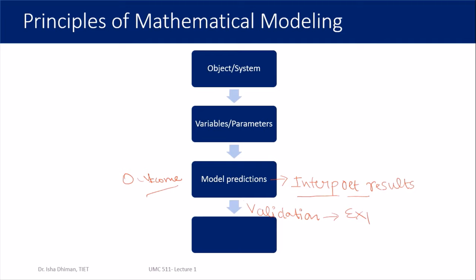We need to perform the step of validation. Sometimes validation is done through experimentation: you have experimental data and you verify the outcomes of your model against it — if they match, your model is working correctly. Sometimes validation is done intuitively — you check whether the physics of the model matches reality. For example, in a population model, if the final answer for population turns out to be negative, that is mathematically possible but makes no sense in real life, indicating something was wrong with the model.